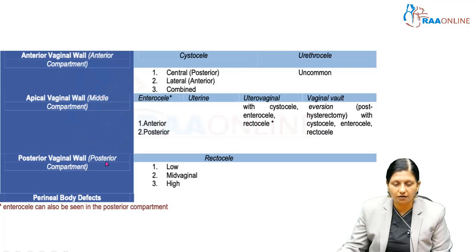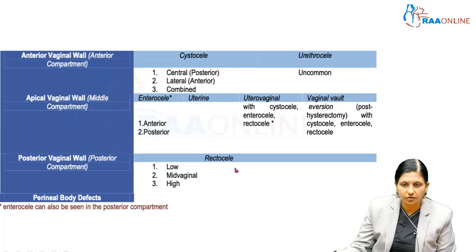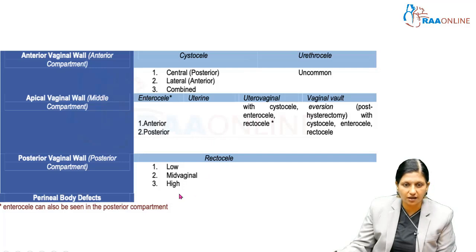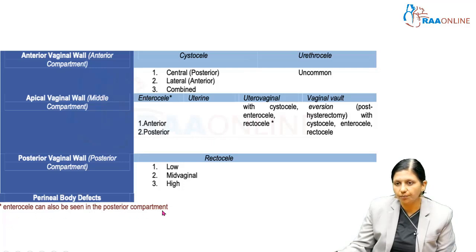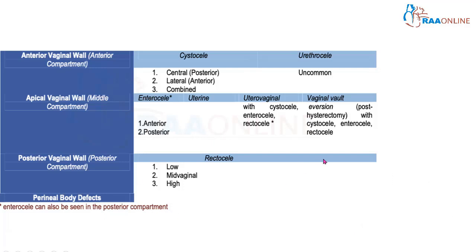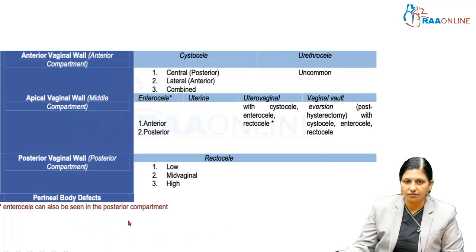In the posterior vaginal wall or posterior compartment, prolapse can be a rectocele — which may be low, mid-vaginal, or high — along with perineal body defects. This anatomical classification also notes that an enterocele can be seen in the posterior compartment as well.